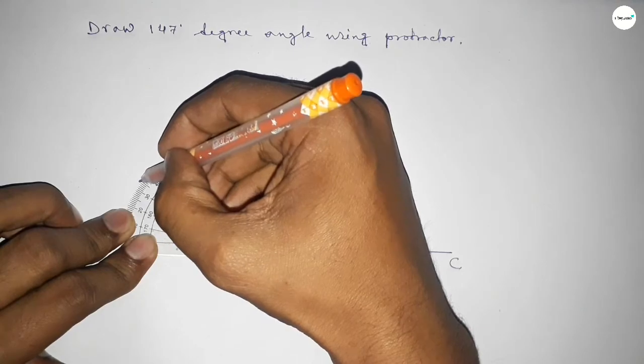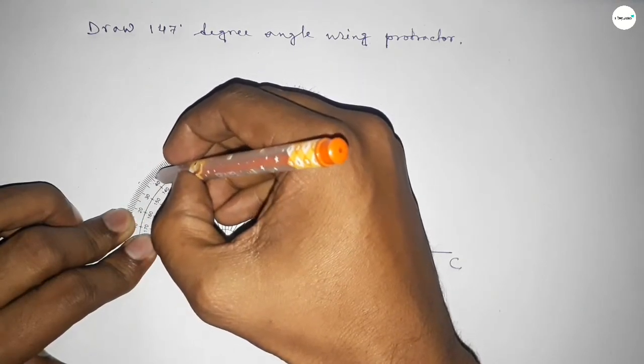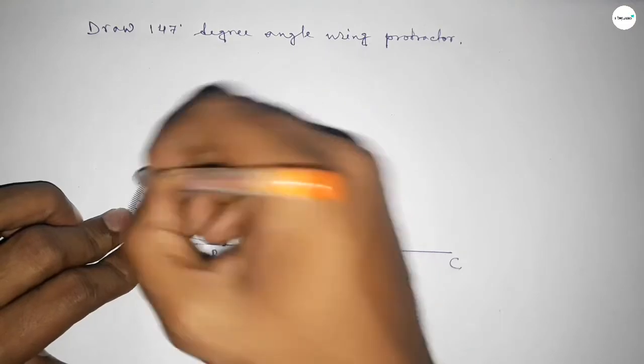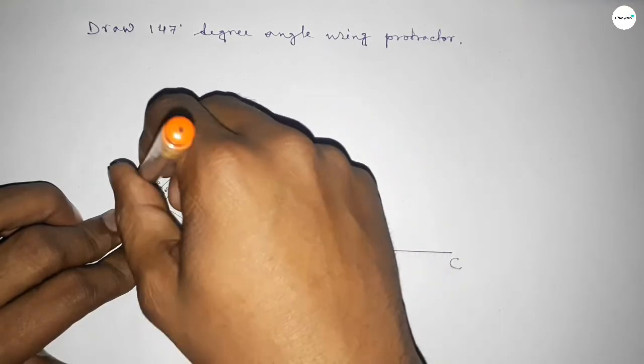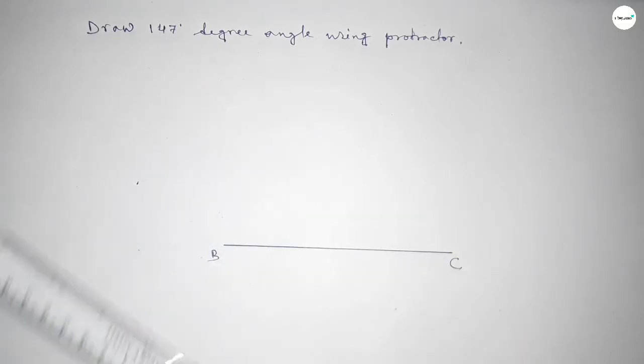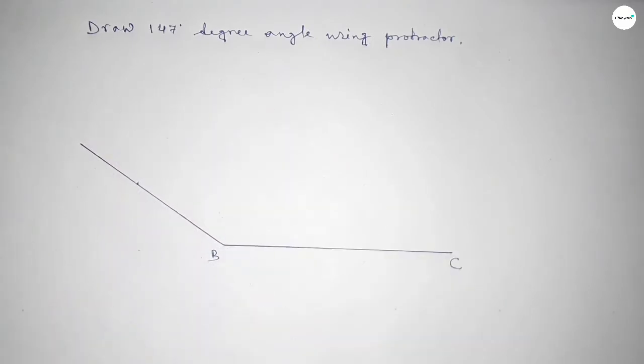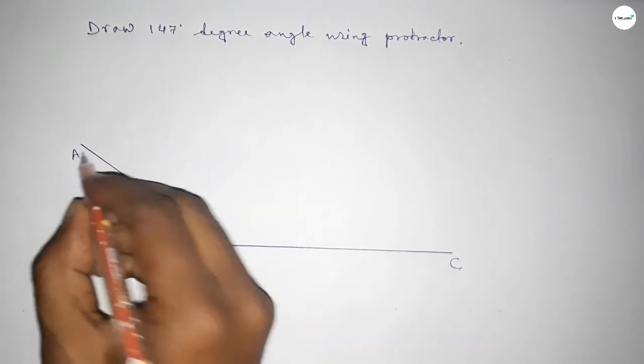146, 147. So this is 147 degrees. Okay, now joining this to get 147 degrees. Now taking here point A.